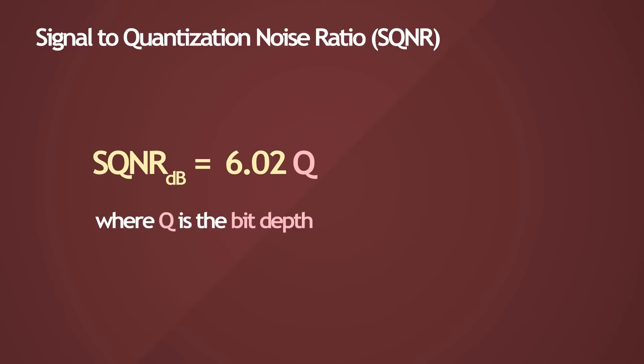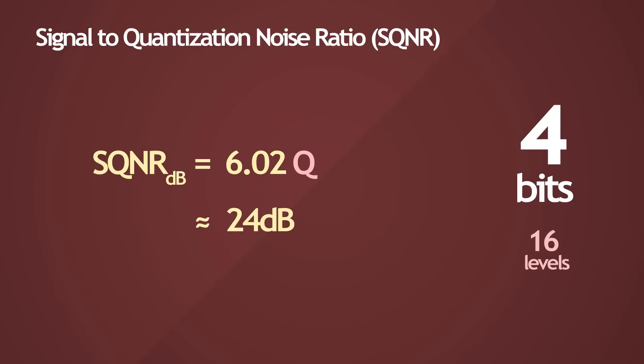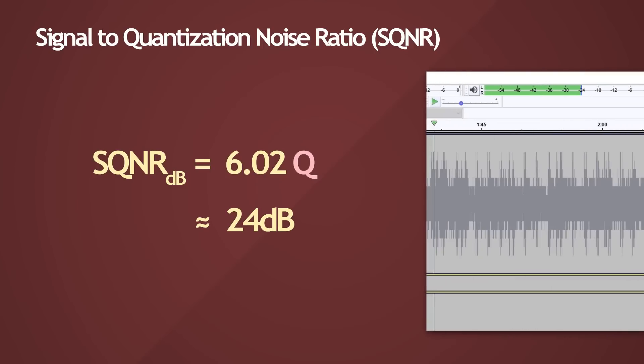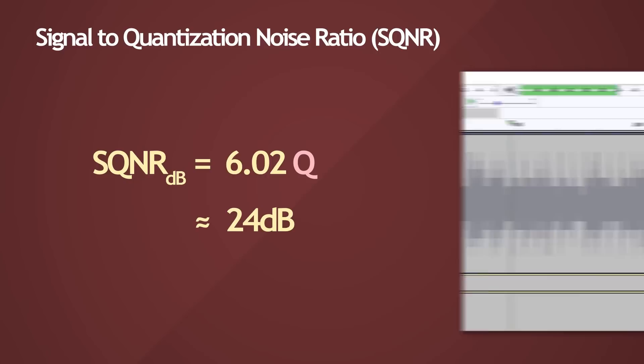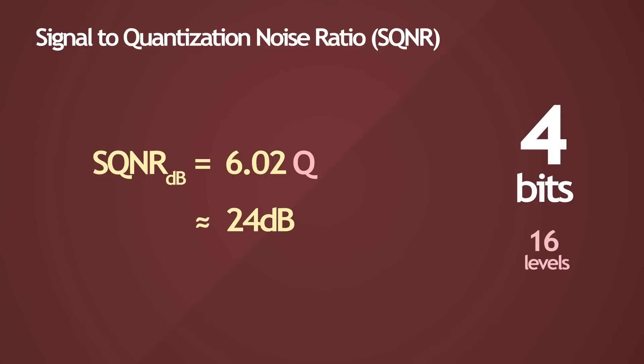So if I substitute the value of bit depth to 4, we get the signal-to-quantization noise ratio of about 24dB. This is practically what we saw with the constant noise floor at the negative 24dB earlier. This technically means that for an audio track quantized at 4 bits, we have a maximum dynamic range of 24dB.